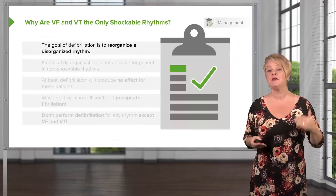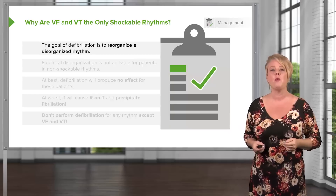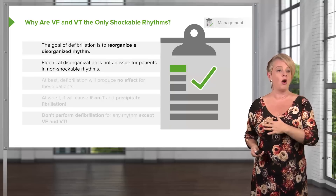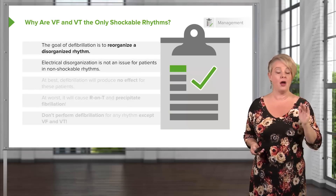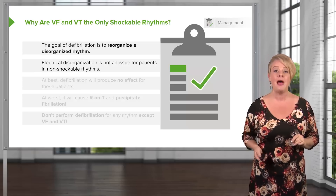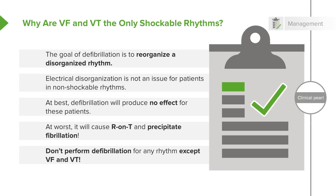Why do we only shock VFib and VTac? On TV, everybody in cardiac arrest gets shocked and jumps back to life, but it doesn't work that way. The whole goal of electricity is to reorganize a rhythm that is disorganized. In a non-shockable rhythm like PEA, electrical disorganization is not the problem. At best, shocking a non-shockable rhythm does nothing. At worst, you could hit the patient at the wrong point in the cardiac cycle, cause an R-on-T phenomenon, and precipitate a dysrhythmia like ventricular fibrillation — turning a normal rhythm into VFib. So defibrillation is only for VFib and VTac.